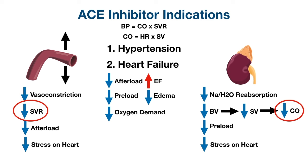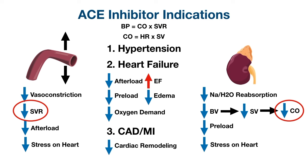By reducing both afterload and preload, we decrease oxygen demand on the heart, which is beneficial not only in heart failure but also in coronary artery disease or after a myocardial infarction — exactly why ACE inhibitors are commonly indicated in CAD or post-MI to limit oxygen demand and stress on the heart. Chronic hypertension, heart failure, CAD, or recent MI can all lead to cardiac remodeling, changing the size and shape of the heart and decreasing pumping function. ACE inhibitors help reduce cardiac remodeling by decreasing afterload, preload, and overall stress on the heart.